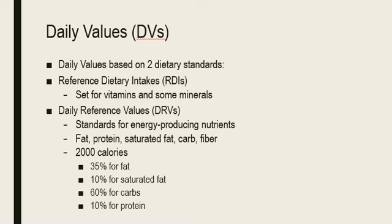The FDA chose 2,000 calories as the reference for calculating percent daily values for energy-producing nutrients. These include 35% for fat, 10% for saturated fat, 60% for carbohydrates, and 10% for protein.